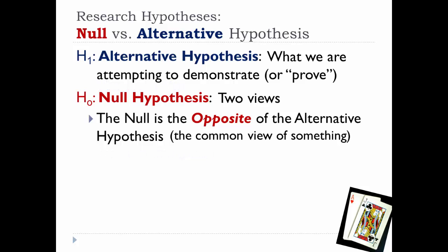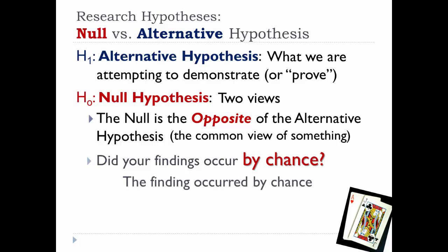The second view is that everything has to do with chance, and the likelihood that what you found was not real at all. It was just chance or coincidence. Either your research findings occurred by chance or coincidence, or what you found did not occur by chance.